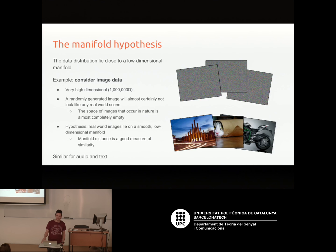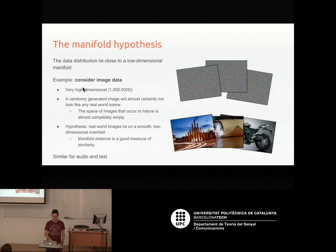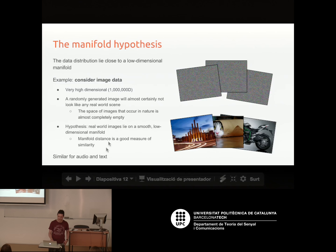Why do we think the manifold hypothesis might be true? Consider image data: a thousand-by-thousand grayscale image has a million dimensions. We know that any randomly generated image will almost certainly just be garbage noise — it won't look like anything from a camera or natural scene. So the space occupied by natural images is almost completely empty, and the manifold hypothesis says the data lies near some smooth manifold where manifold distance is a good measure of similarity. A similar argument applies to audio and text.